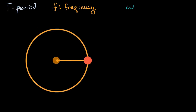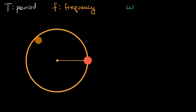And if we're talking about uniform circular motion, a cycle is how long does it take — if this is, say, some type of a tennis ball that's tethered to a nail right over here, and it's moving with some uniform speed — a period is how long does it take to go all the way around once. So, for example, if you have a period of one second, this ball would move like this: one second, two seconds, three seconds, four seconds. That would be a period of one second.